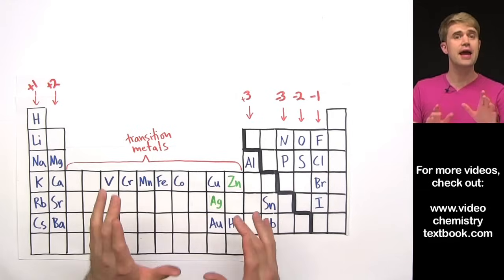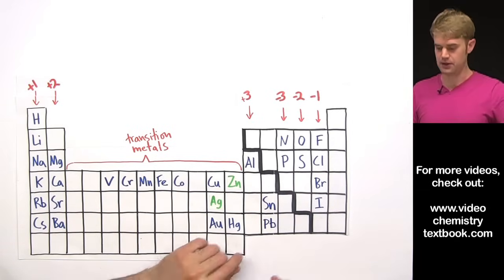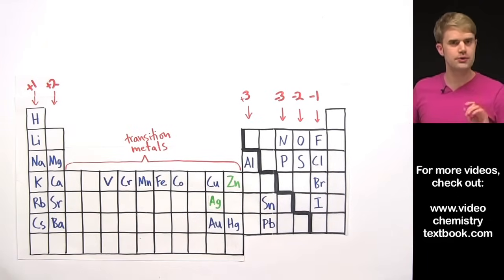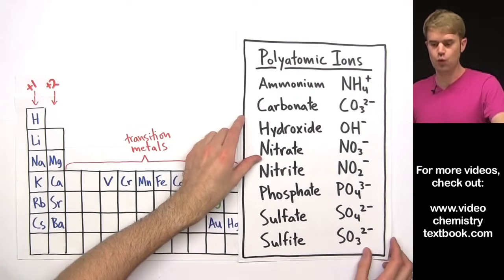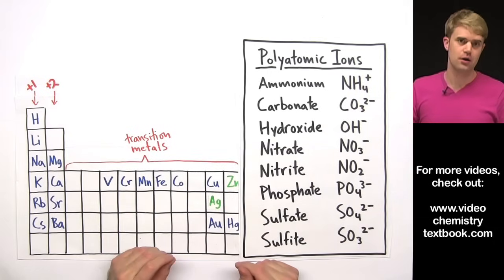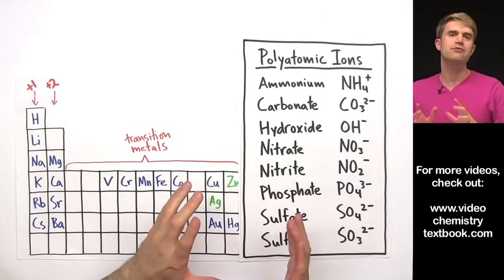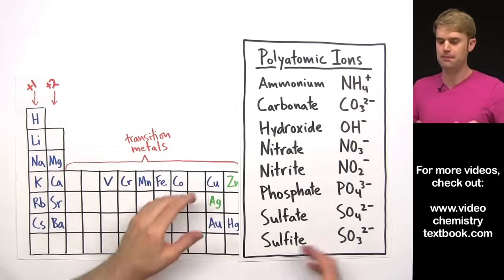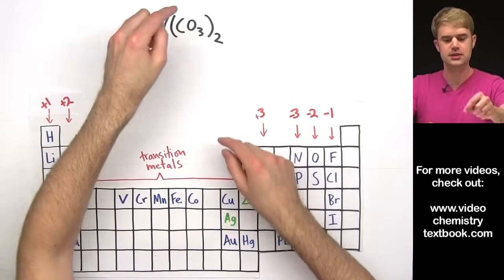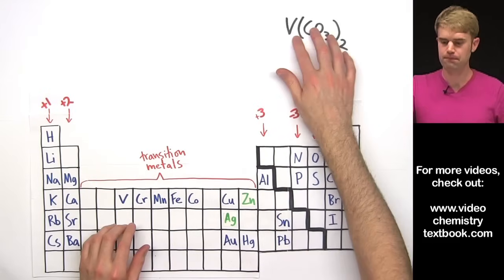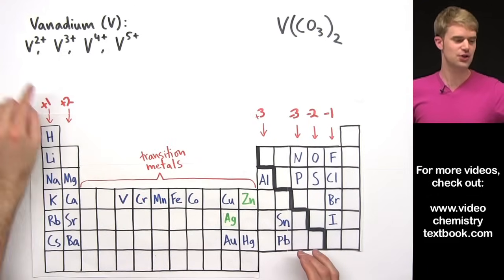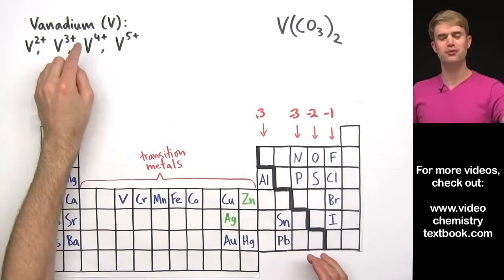Now, so far in all of our examples, the negative ion has been a single element, bromide or sulfide or nitride. But it's also possible for transition metals to form compounds with polyatomic ions which are groups of atoms that together have a charge. So I want to do one example where we have to figure out the charge on a transition metal that's in a compound with one of these polyatomic ions. Here's our last one, V, then parentheses, CO3, 2. So the V here is vanadium which is a transition metal that's able to make four different types of ions, 2+, 3+, 4+, and 5+.